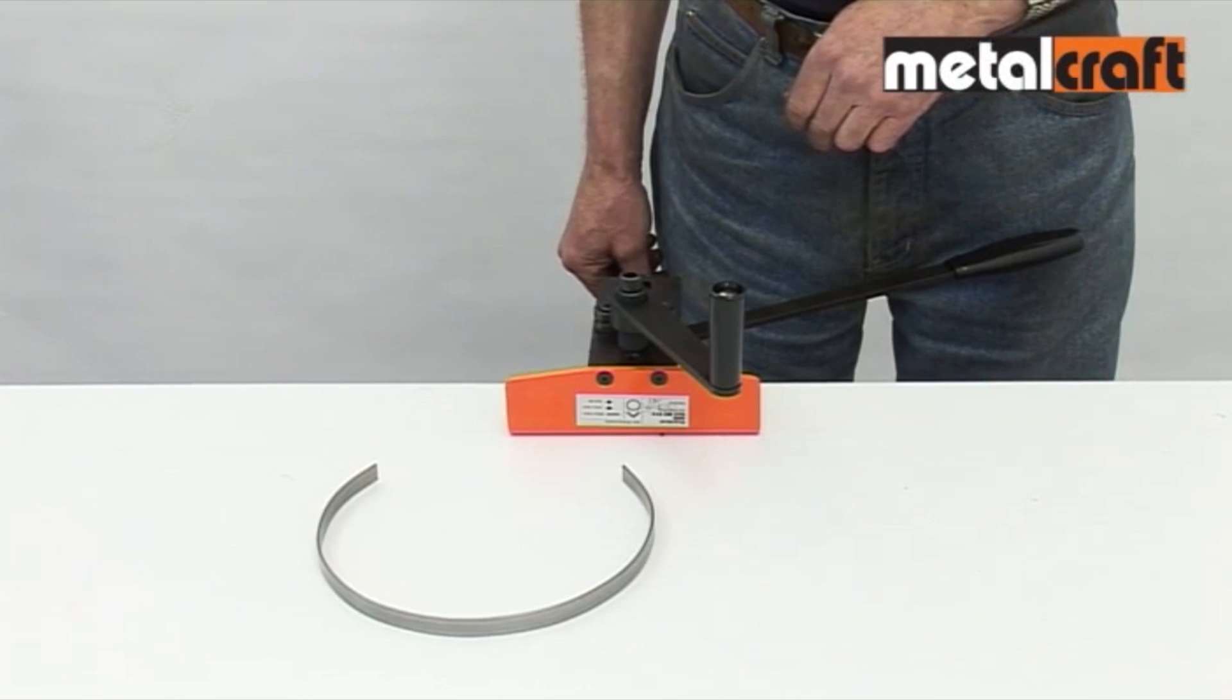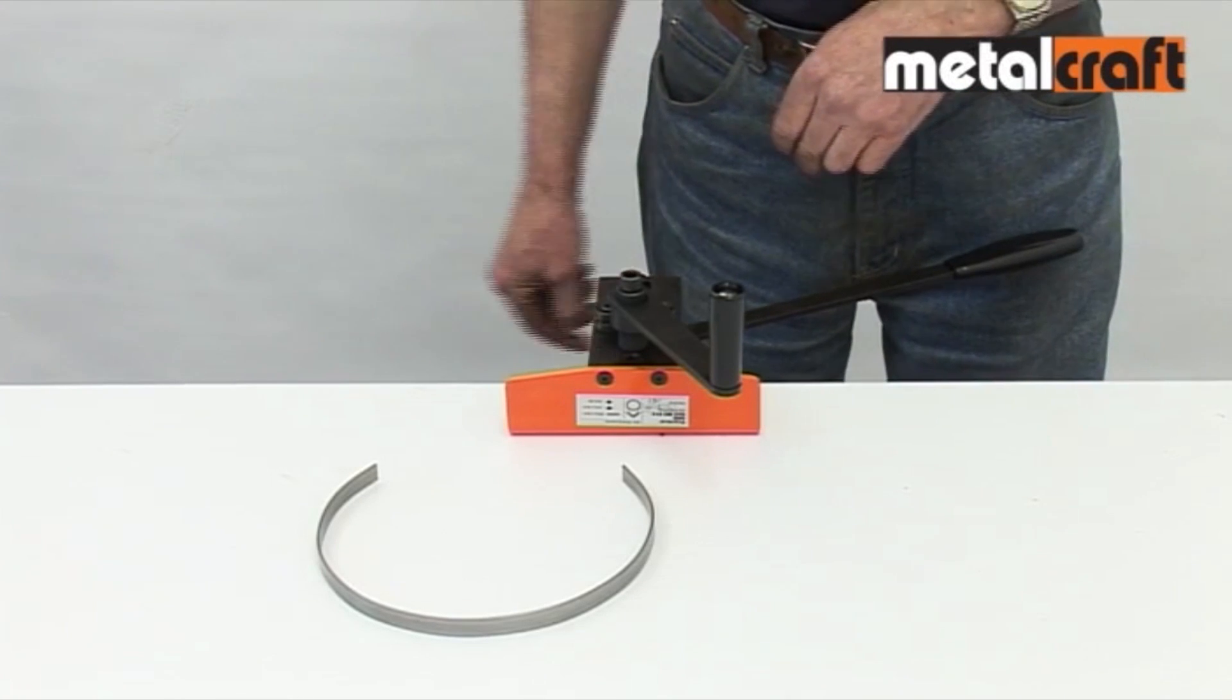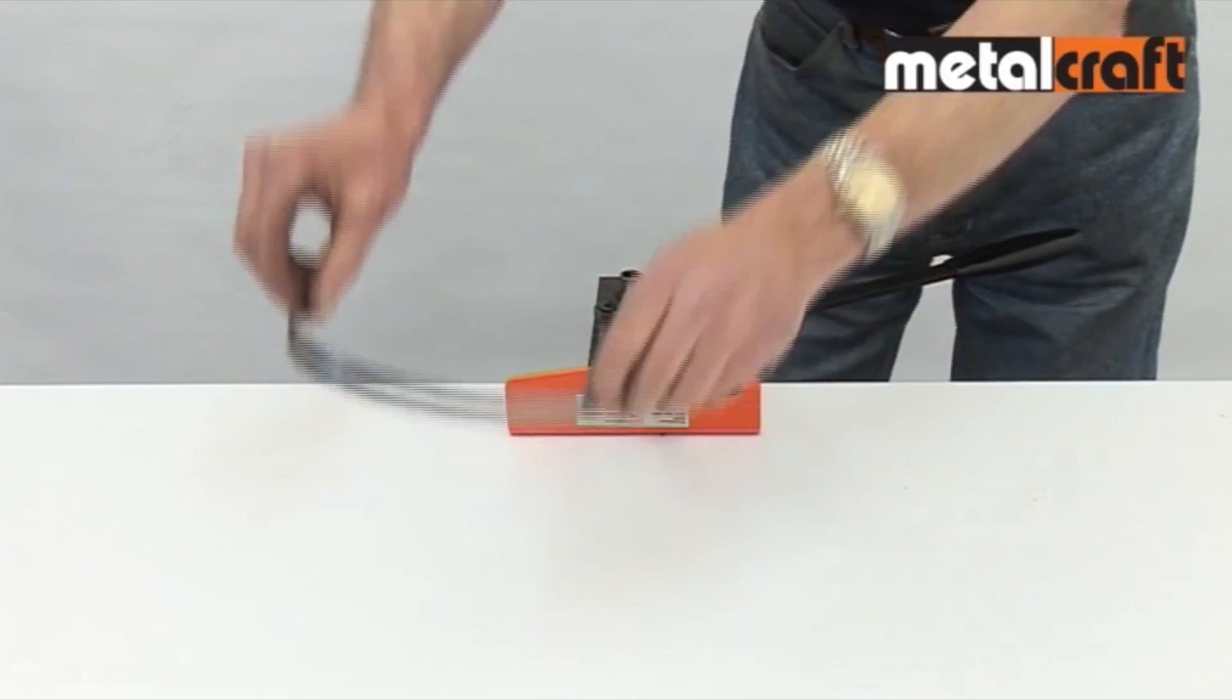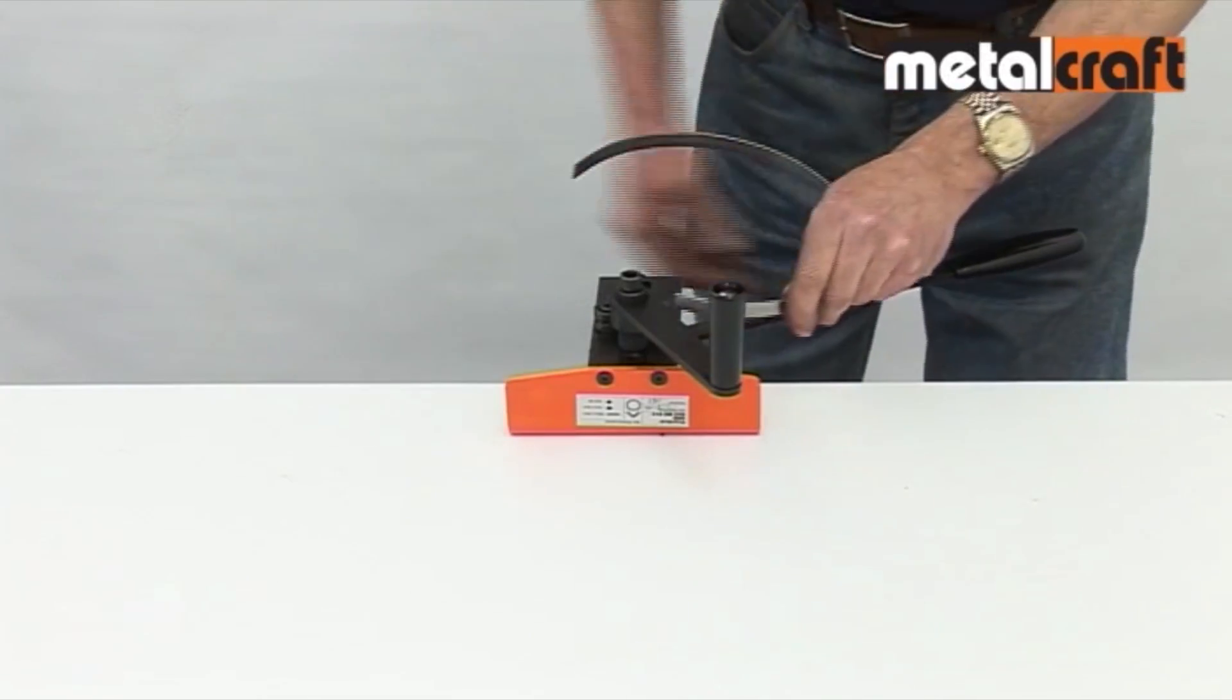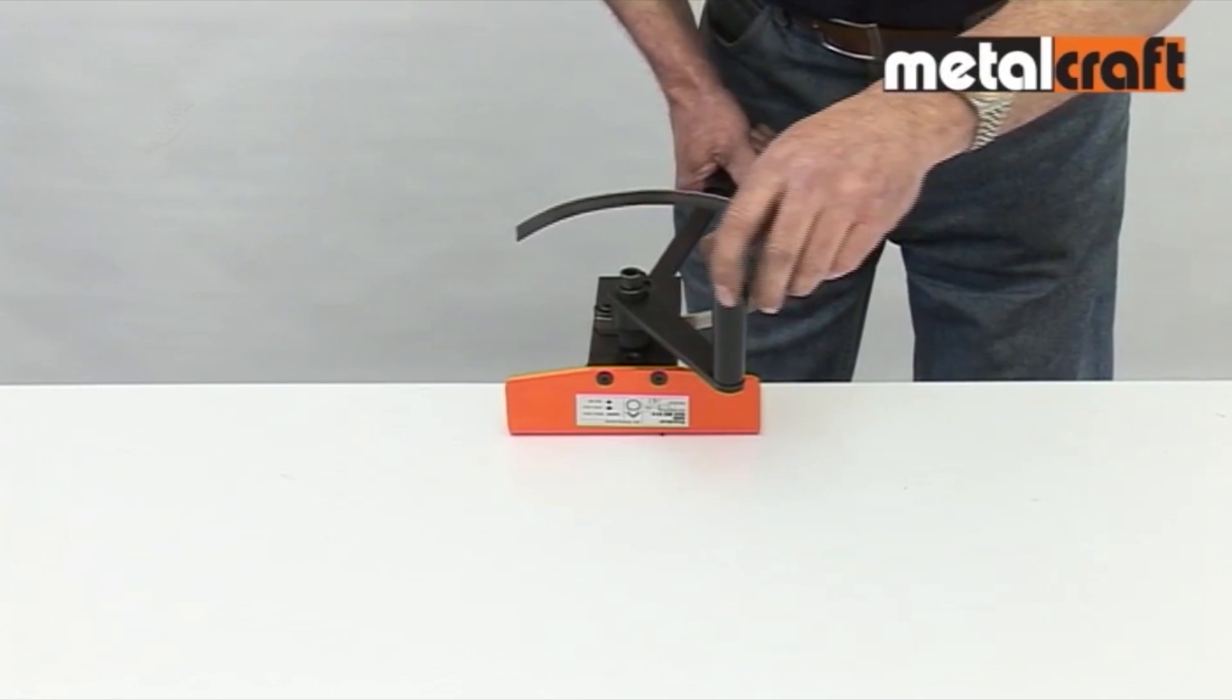And what happens if you don't get it right? Do you have to throw your curve or circle away? Well, the answer is no. You can simply put it back in the opposite way and roll it back to its flat state.